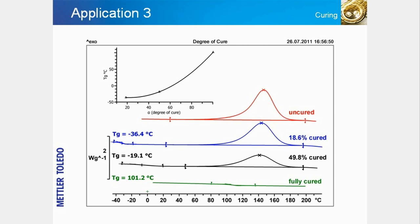If the reaction enthalpy of the uncured material is known, the degree of conversion before the measurement can be calculated from the enthalpy of the post-curing reaction. The conversion is directly related to the degree of cure. The upper inserted diagram shows the relationship between glass transition temperature, Tg, and the reaction conversion or degree of cure, alpha, determined from the DSC measurements.